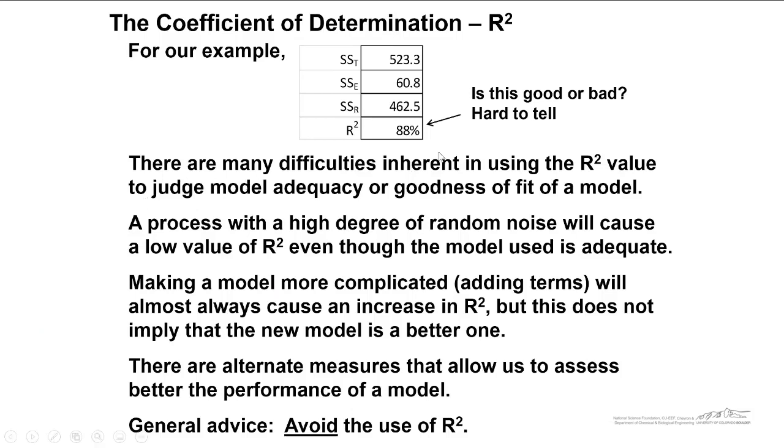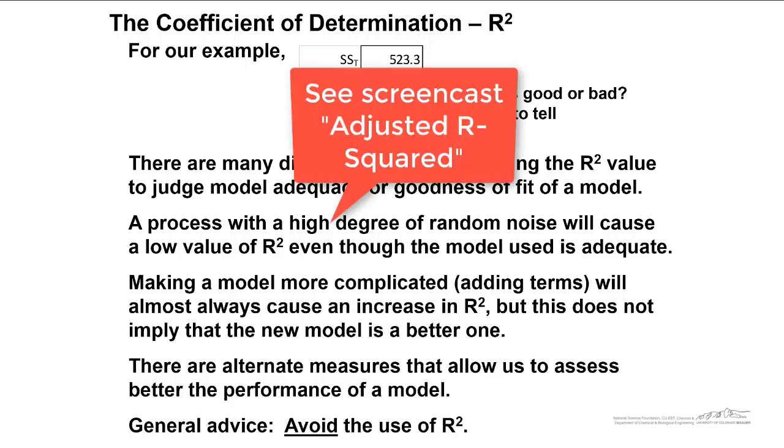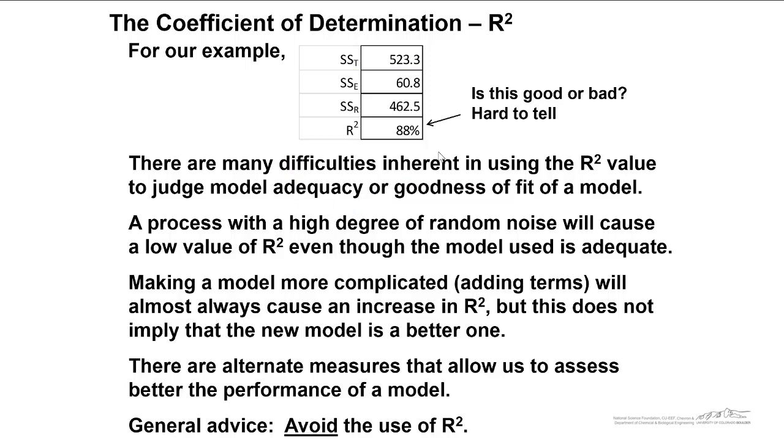So just to sum things up, for our example, we got an R squared of 88%. There are many difficulties inherent in using the R squared value to judge the model adequacy or goodness of fit. I've got a follow-up screencast that's going to show you why you don't want to rely upon R squared. It's better to use adjusted R squared.